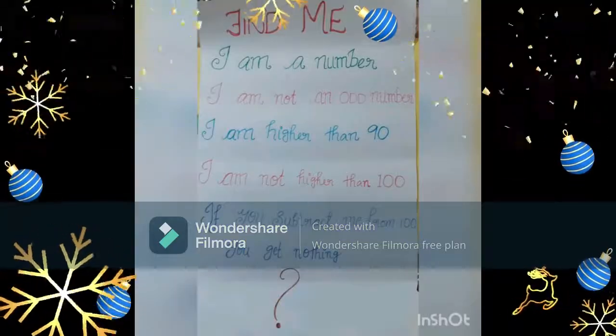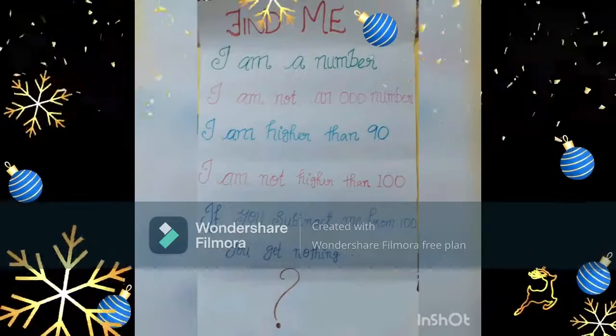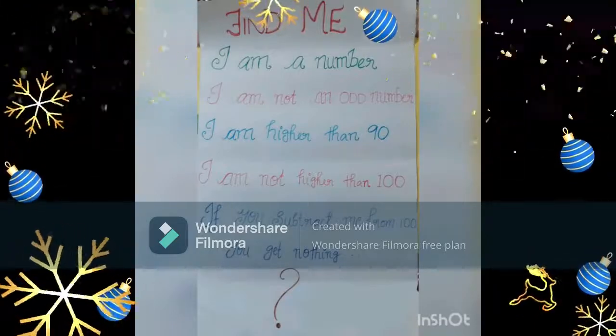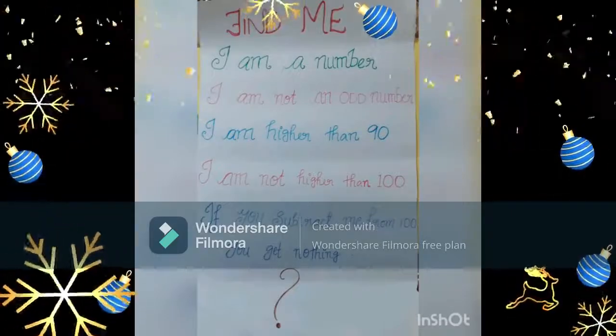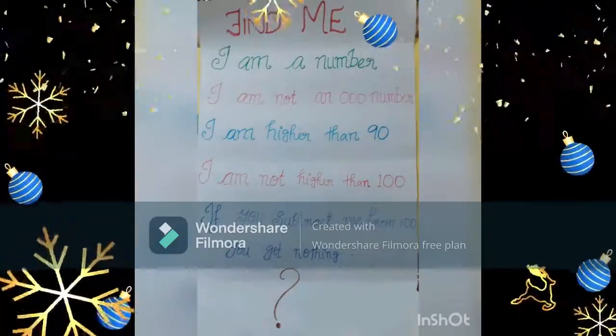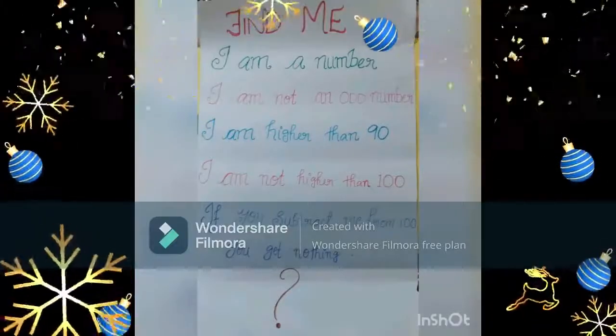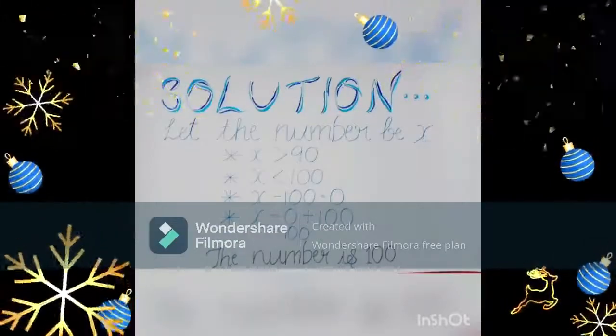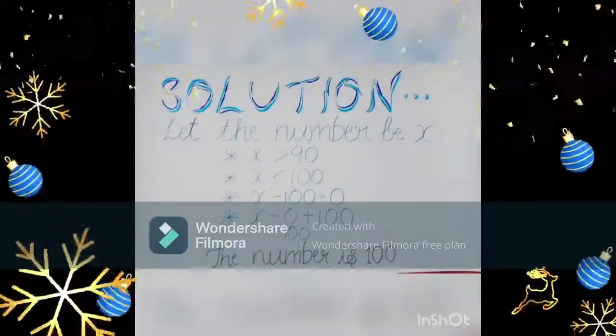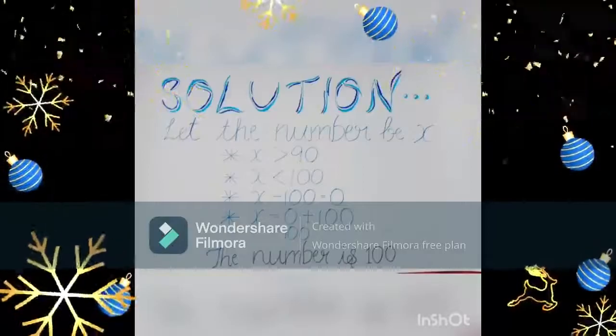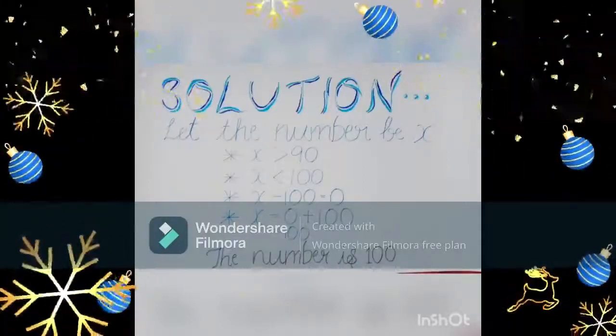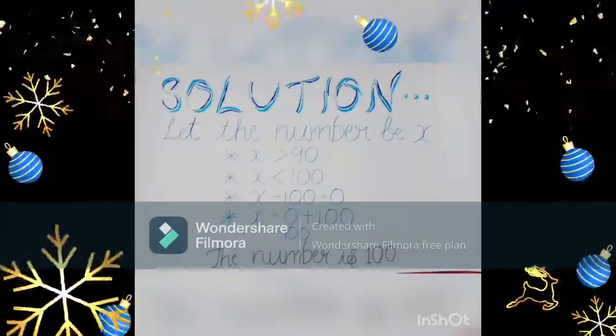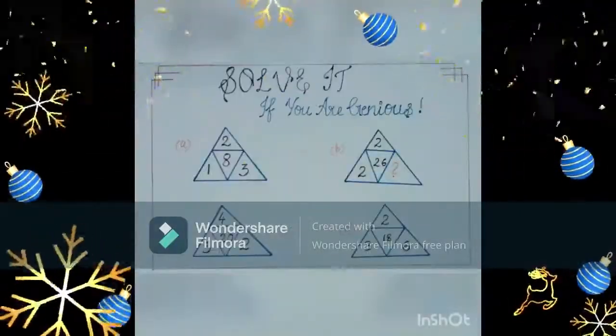Tricky Math puzzle - Find me: I am a number. I am not an odd number. I am higher than 90. I am not higher than 100. If you subtract me from 100, you get nothing. Solution: Let's consider the number be x. We know x is greater than 90 and x is less than 100. If you subtract x from 100 you get 0, so the answer is 100.